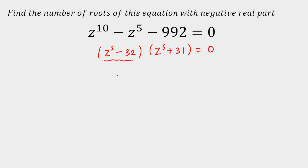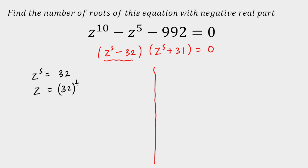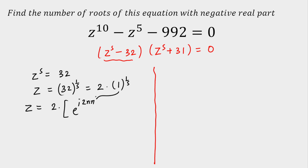Let's start with the first factor: z raised to power 5 minus 32. So z raised to power 5 is equal to 32, which means z equals the 5th root of 32. I can write this as 2 multiplied by the 5th root of 1, i.e., the 5th roots of unity. Using De Moivre's theorem, I write 1 as e raised to power iota 2nπ, whole to the power 1 by 5.